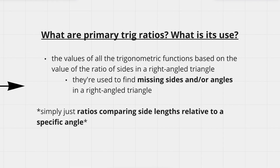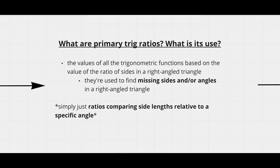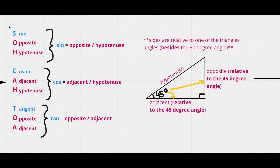What are primary trig ratios and what are their uses? Primary trig ratios are the values of all the trigonometric functions based on the ratio of sides in a right angle triangle. Simply put, they're ratios that compare the side lengths of right angle triangles relative to a specific angle, and they're used to find missing sides and/or angles in a right angle triangle.